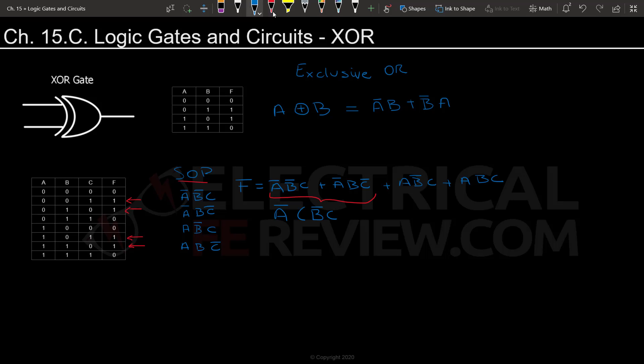We have B'C + BC' A' + B'C + ABC. This was supposed to be a C NOT.